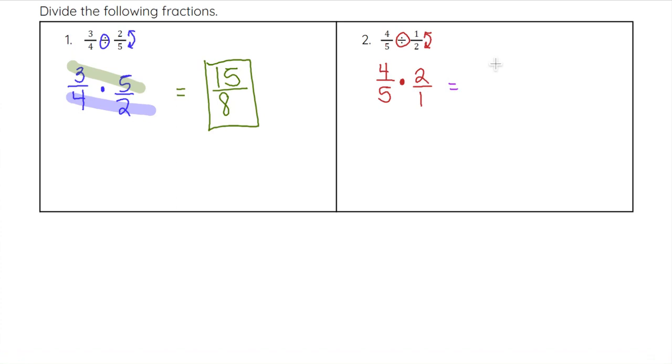We multiply across the top, which is going to be four times two, which is eight, and across the bottom, which is five times one, which is five. So eight over five would be our final answer on that one.